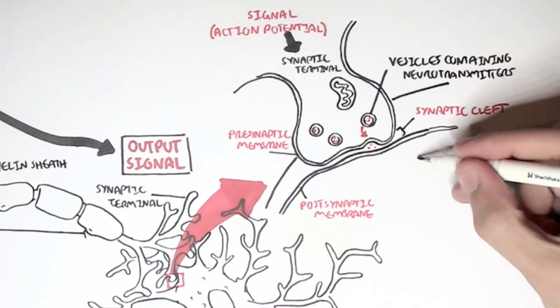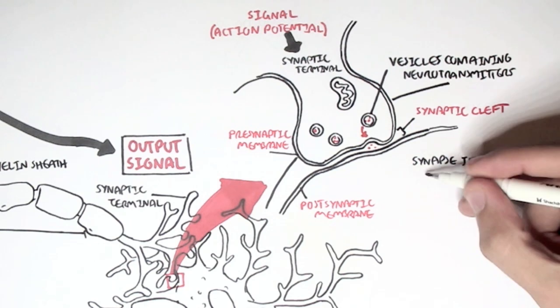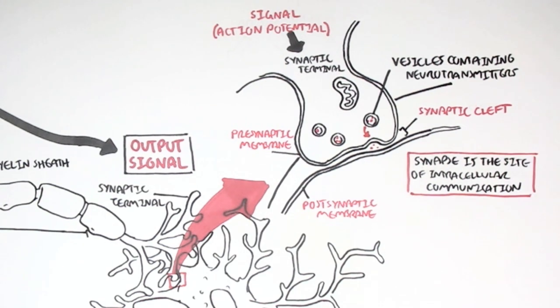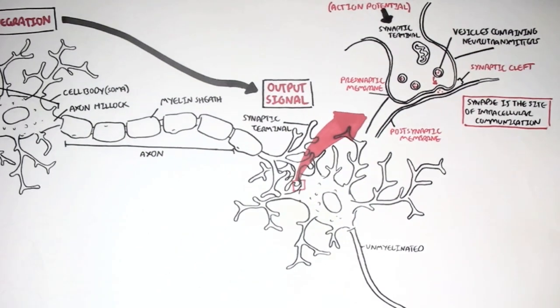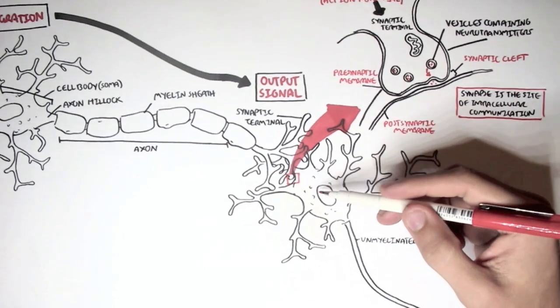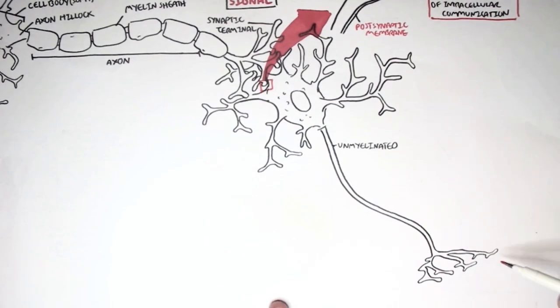So we can say that the synapse is the site for intracellular communication. And seeing that the postsynaptic membrane of the postsynaptic cell belongs to the dendrite of a neuron, it will receive this information and then create another action potential that will propagate along the axon towards the synaptic terminal.